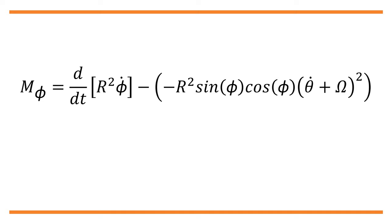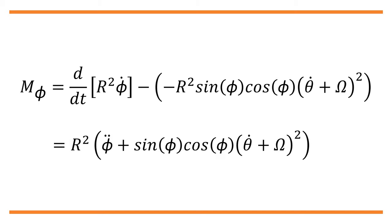Therefore, for the φ coordinate, M_φ = d/dt [R² φ̇] − (−R² sin(φ) cos(φ) (θ̇ + Ω)²), which equals R² [φ̈ + sin(φ) cos(φ) (θ̇ + Ω)²].